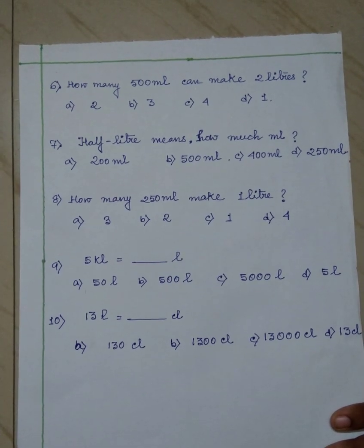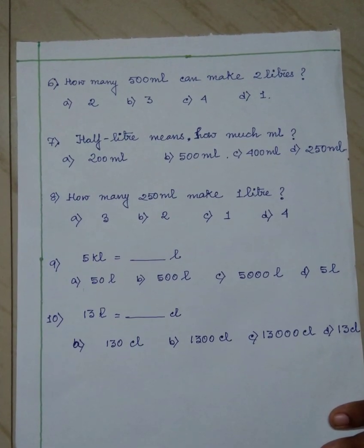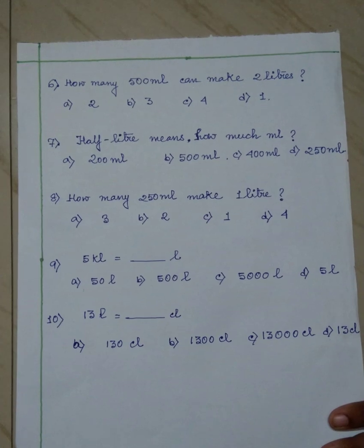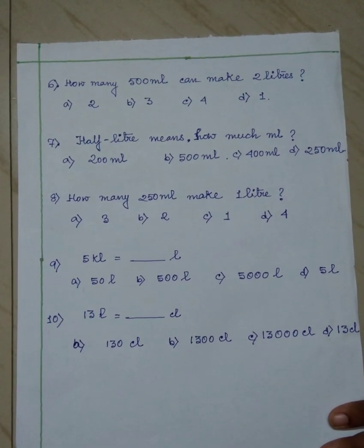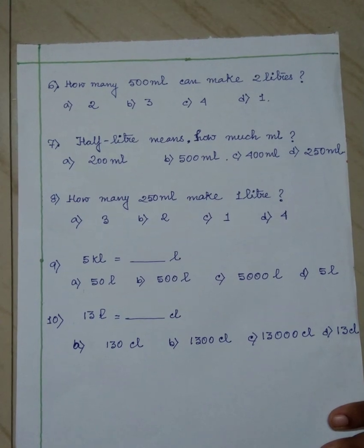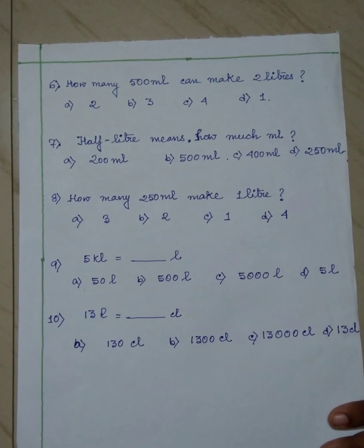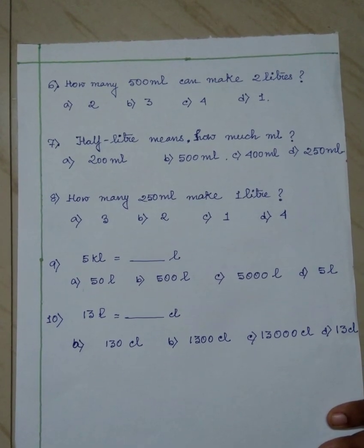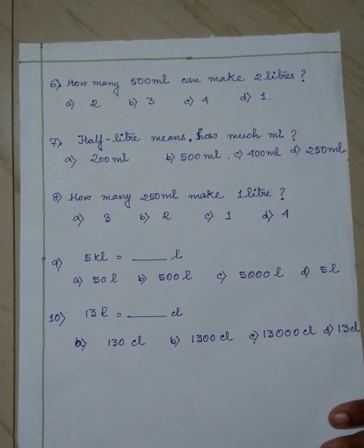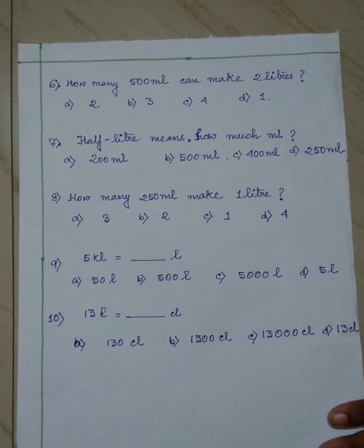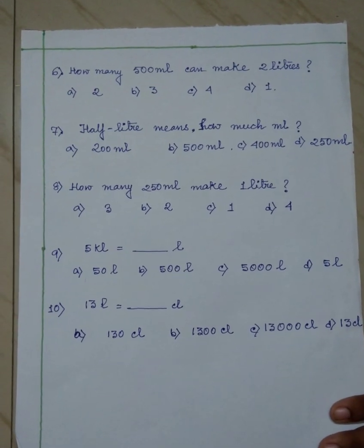Next, ten number question is 13 litre equals to how much centilitre? The options are 130 centilitre, 1300 centilitre, 1300 centilitre and option D is 13 centilitre. You have to take the correct option.